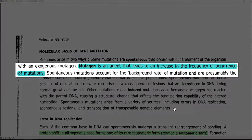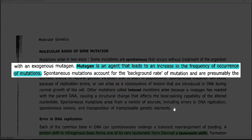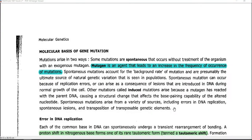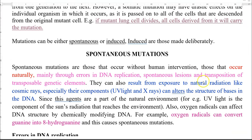What is a mutagen? Any kind of agent that leads to an increase in the frequency of occurrence of mutation can be referred to as a mutagen. Now we look at the ways in which mutation can occur. It can occur naturally as a spontaneous mutation, or it can be induced, which is referred to as an induced mutation.